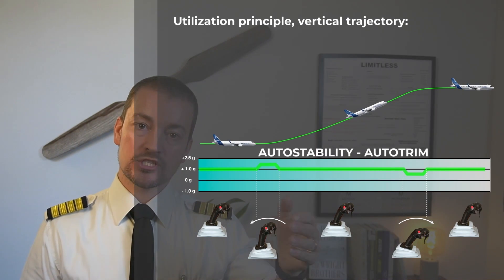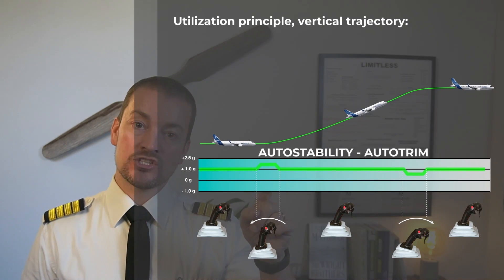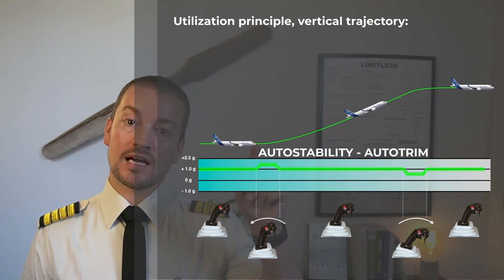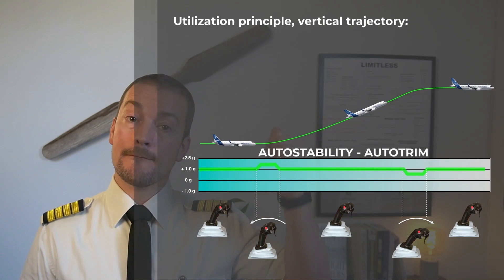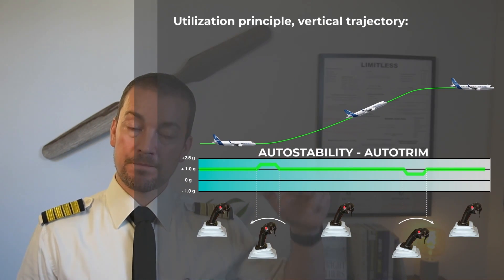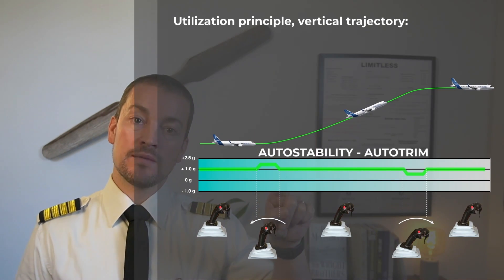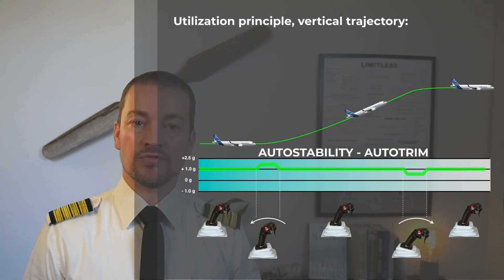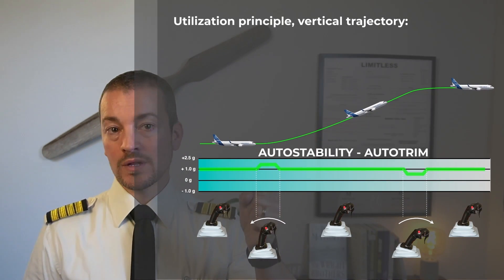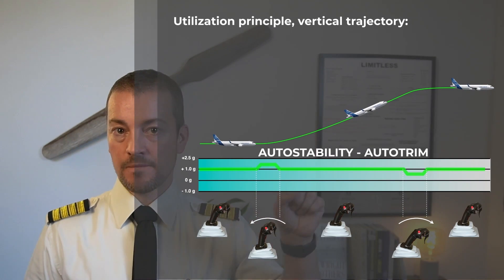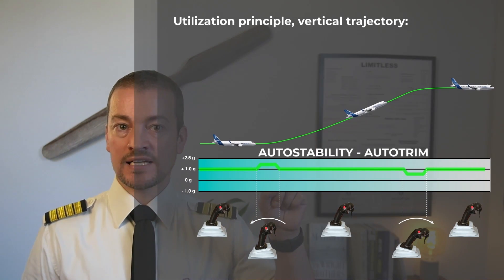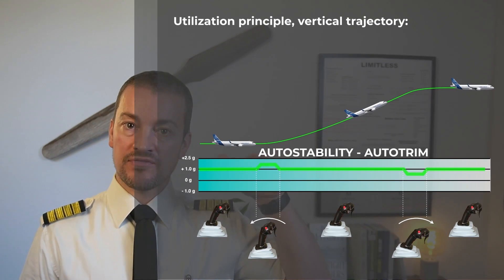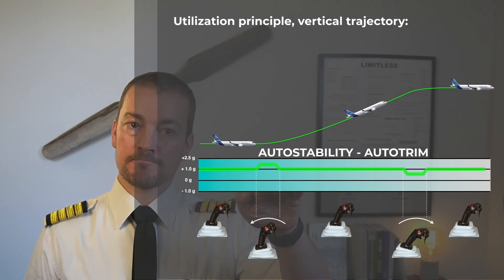As I apply backward pressure, I am commanding a g-load. As the side stick moves backwards, the aircraft starts to change its trajectory — I'm raising the nose by moving the elevator. I'm asking for a maneuver, maybe 1.8g — a nice gentle maneuver. As long as I'm holding the side stick deflected, I'm asking for that g-load, which means the elevator stays deflected and the aircraft nose keeps rising.